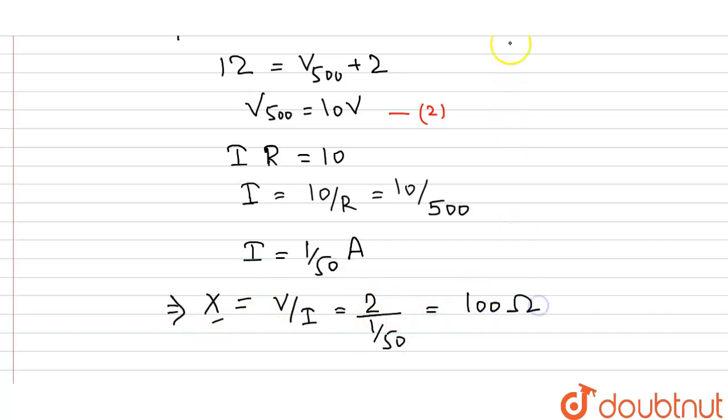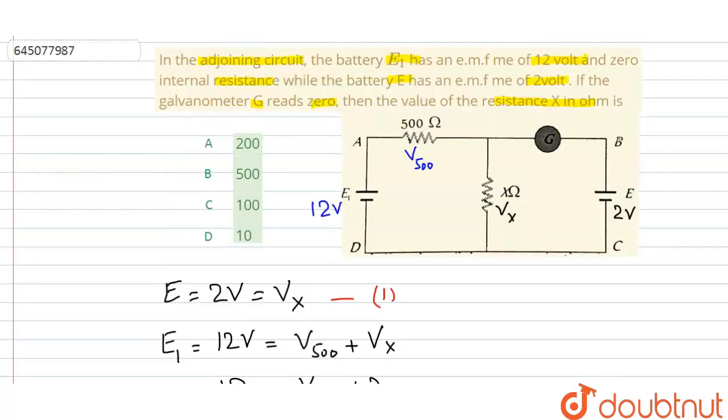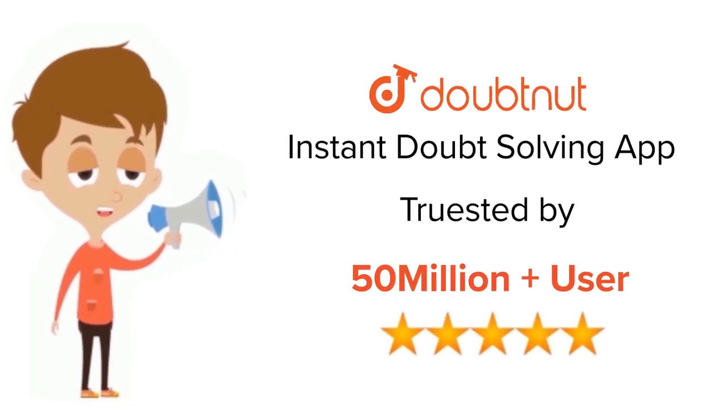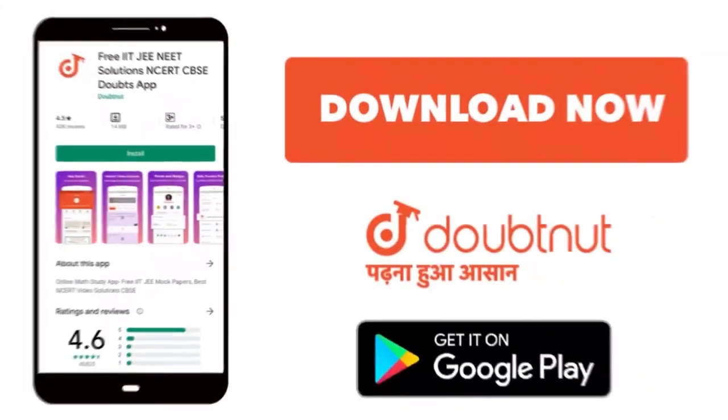The X resistance comes out to be 100 ohms. So this is the answer for the X resistance, and from the options I can take the correct one, that is option number C. Thank you. For class 6th to 12th up to IIT-JEE and NEET level, trusted by more than 5 crore students, download Doubtnet app today.